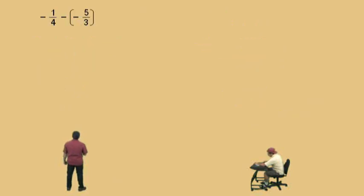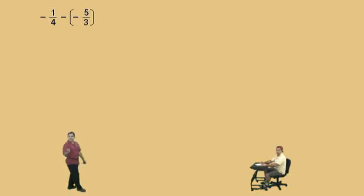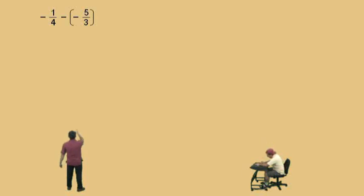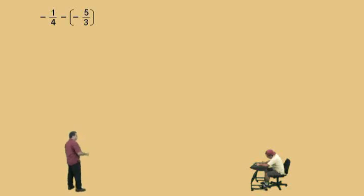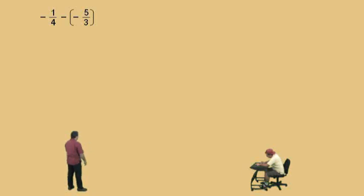Negative one-fourth subtract a negative five-thirds. Don't get scared — this is just subtracting a negative number. Remember, subtracting a negative number is the same as adding the opposite, so we end up with addition. That should be review. Before we get started, let's find our LCD. It's twelve.